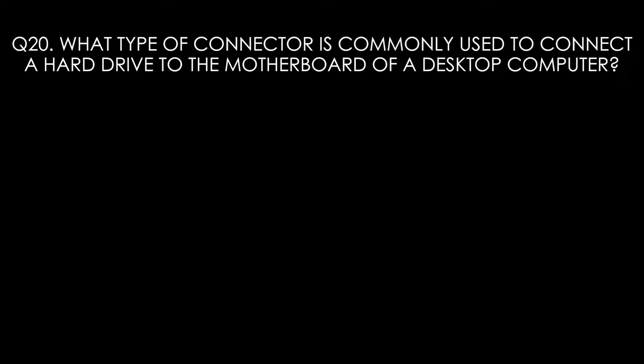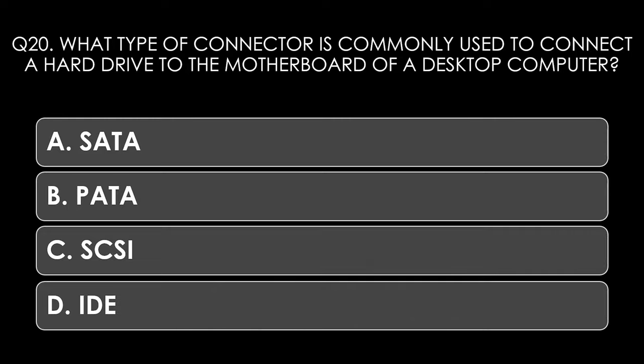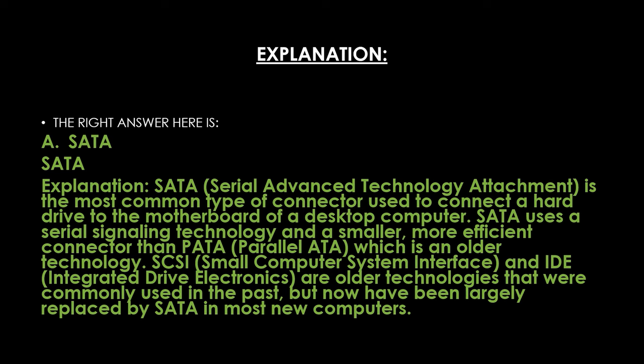Question twenty. What type of connector is commonly used to connect a hard drive to the motherboard of a desktop computer? Options: A: SATA, B: PATA, C: SCSI, D: IDE. The right answer is SATA — Serial Advanced Technology Attachment — the most common connector type, using serial signaling technology with a smaller, more efficient connector than PATA. SCSI and IDE are older technologies largely replaced by SATA in modern computers.